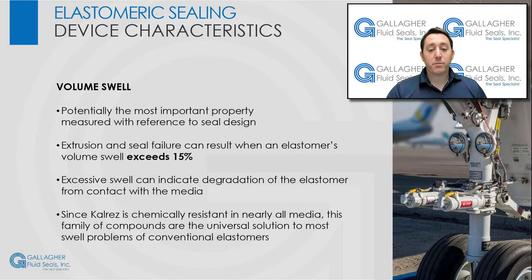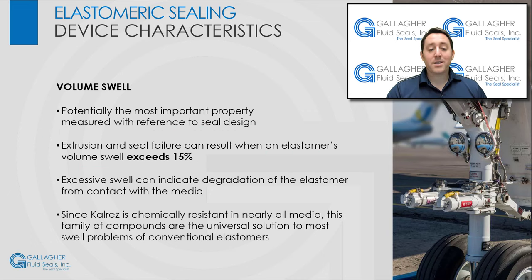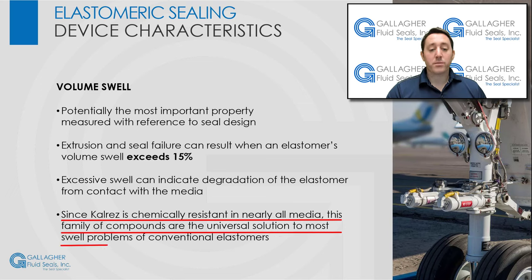Volume swell is perhaps the most important property measured with reference to seal design. If an elastomer swells to a greater volume than the cavity containing it, extrusion and seal failure can result. This generally occurs when volume swell exceeds 15%. Excessive swell can indicate degradation of the elastomer from contact with the media and nearly always results in a loss of seal force. Softening associated with swell also makes the elastomer more susceptible to pressure extrusion. Since CalRez is chemically resistant in nearly all media, this family of compounds is the universal solution to most swell problems of conventional elastomers.